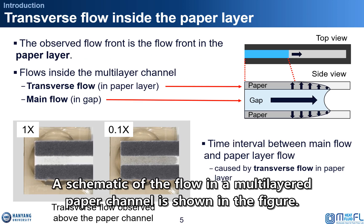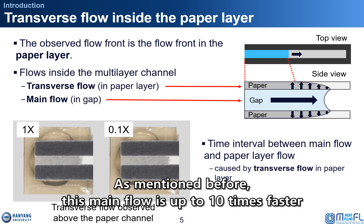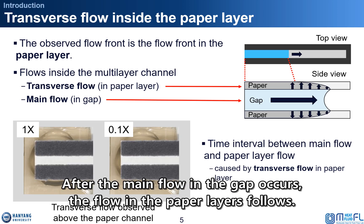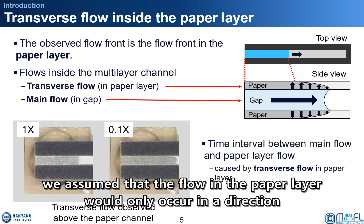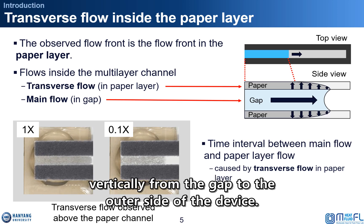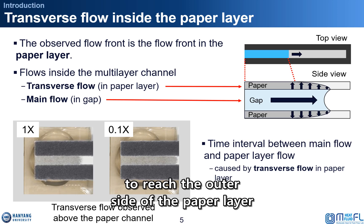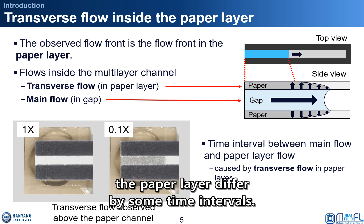A schematic of the flow in a multi-layered paper channel is shown in the figure. First, the main flow occurs in the gap between the paper layers. As mentioned before, this main flow is up to 10 times faster than the flow in a conventional single-layered paper channel. After the main flow in the paper gaps occurs, the flow in the paper layers follows. Since the lateral flow in the paper layers is much slower than the main flow, we assume that the flow in the paper layer would only occur in a direction perpendicular to the main flow, vertically from the gap to the outer sides of the paper device. Because the fluid entering the gap takes time to reach the outer sides of the paper layers observed by the camera, the flow in the gap and the paper layer have some time intervals.